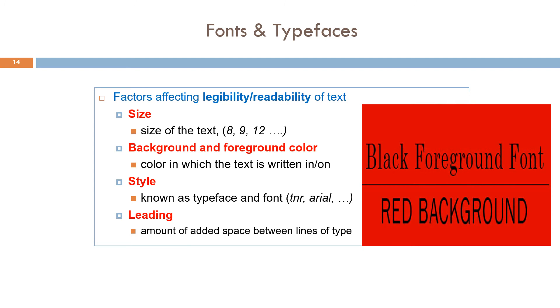Second, background and foreground color. The color in which the text is written in or on. The foreground color usually refers to the text color, and the background color is the page color. Contrast between the foreground and background is one of the most important factors for the ease of reading.